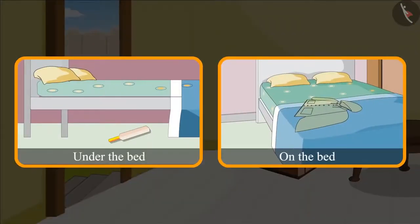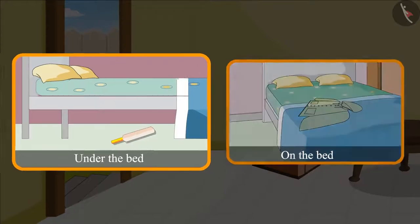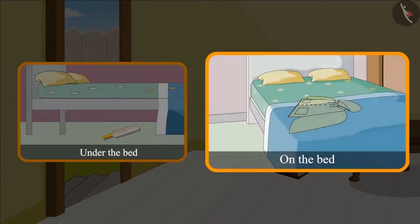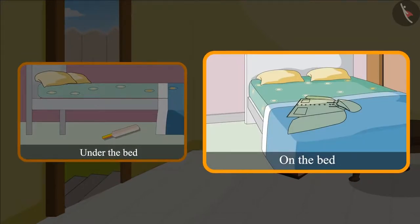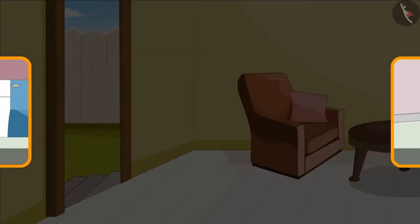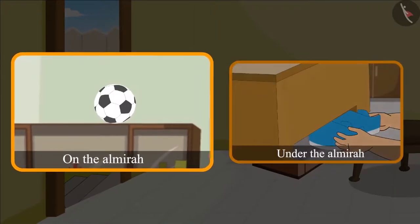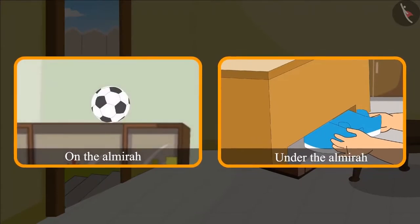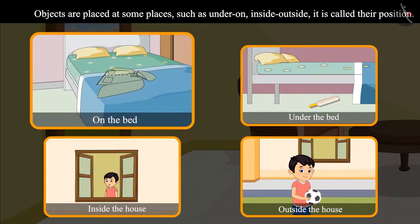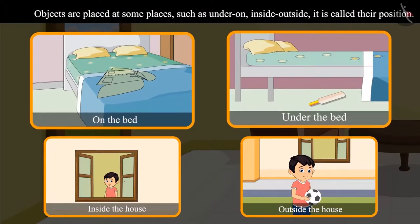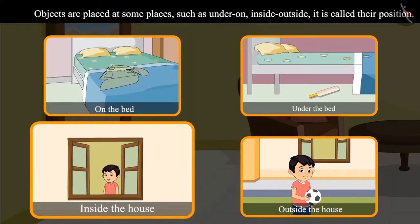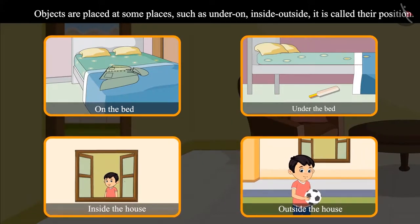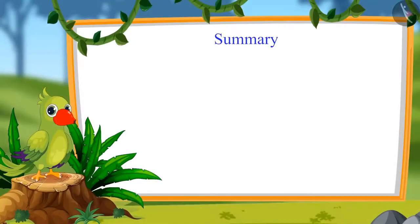Children, did you see where Chotu's bag was kept? Chotu's bag was kept under the bed, and his raincoat was kept on the bed. Chotu's mother took the ball which was kept on top of the almira, and Chotu's shoes were under the almira. So children, we have seen that objects are usually kept at certain places, and words such as under, on, inside, and outside are used to exactly tell us their position.